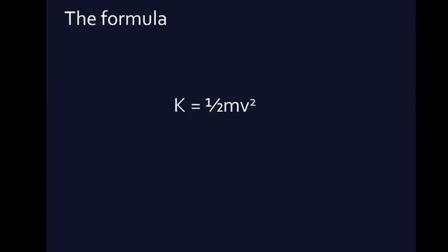So what's the formula for kinetic energy? The formula is K = ½mv². One-half the mass times the square of the velocity is the kinetic energy.